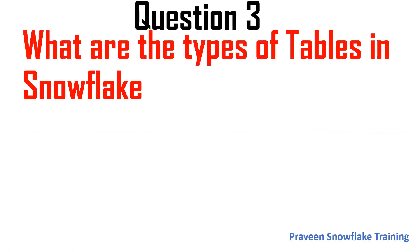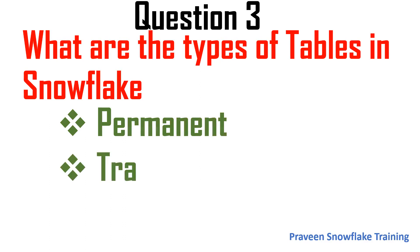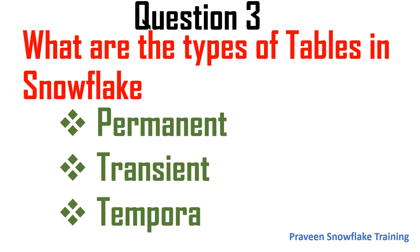The third question is: what are the types of tables in Snowflake? The types are: permanent table, transient table, and temporary table — these are Snowflake internal tables. There is also one more: external table.